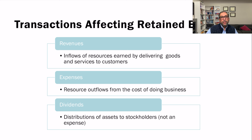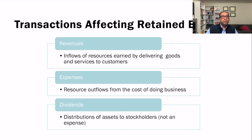Retained earnings are affected by income, which is impacted by revenue and expenses. If revenue increases, income increases. If expenses increase, income decreases; if expenses decrease, income increases — expenses represent resources outflowing from the cost of doing business. Dividends also reduce retained earnings without affecting net income. For example, if we earn $100 and distribute $50 as dividends, retained earnings are $50; if we distribute $80, retained earnings are $20.